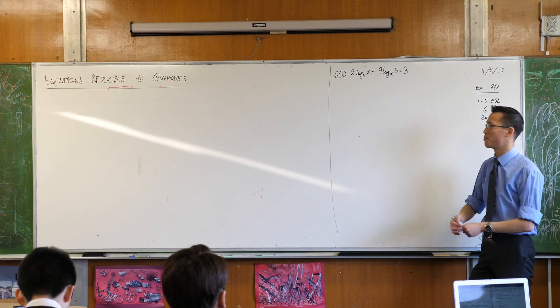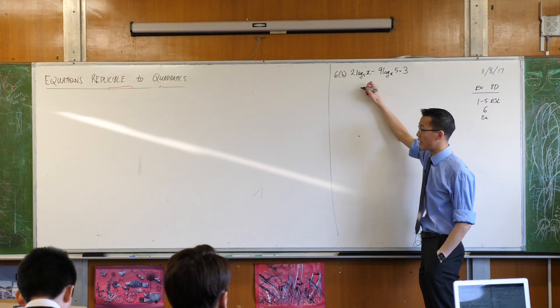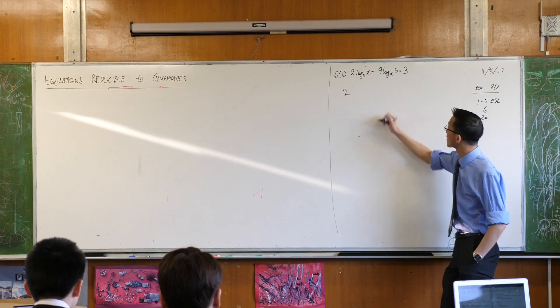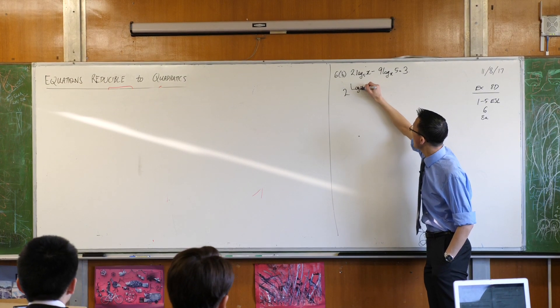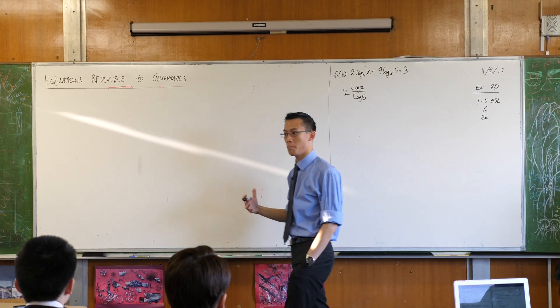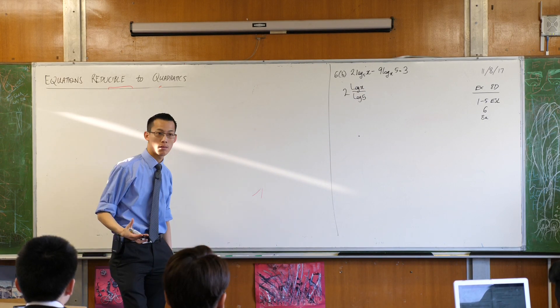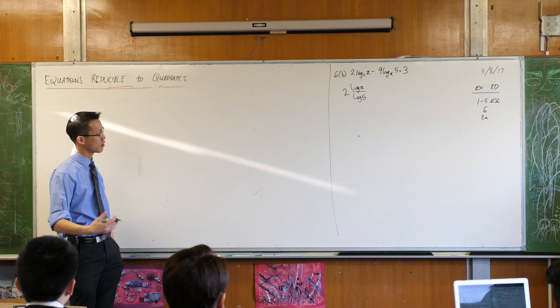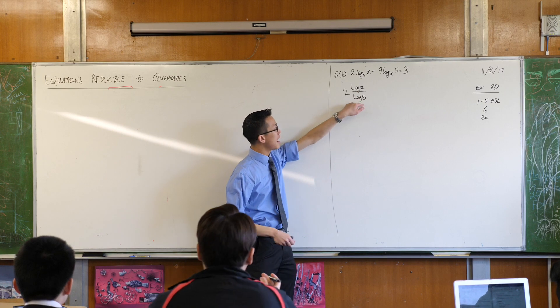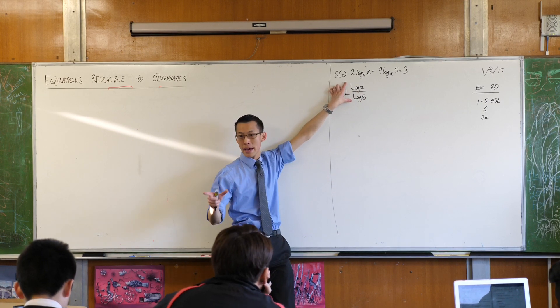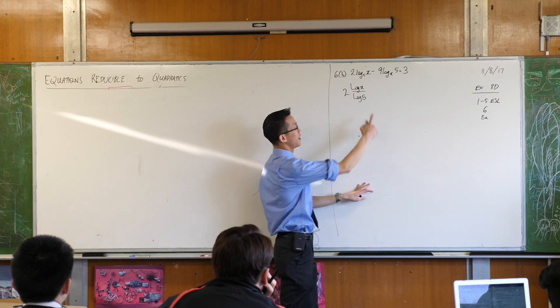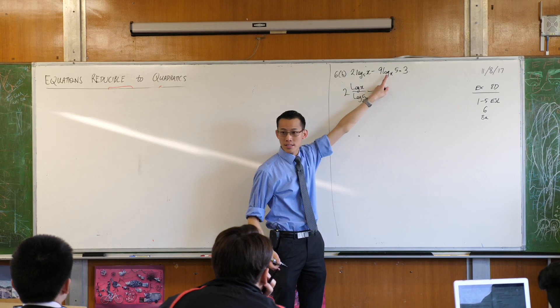So therefore, how do I use change of base law? I can write that this guy over here is 2 times what? How would I write it? Log x on log 5. Does it matter what log base I choose? No, it really can be anything, which is kind of handy, right? So I've separated out these guys into logs with the same base. That's useful. And I don't even care what base it is, so it's the same one. I can do the same thing for this guy.